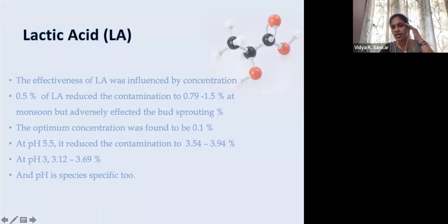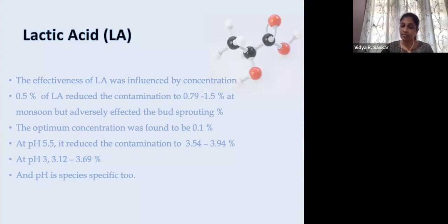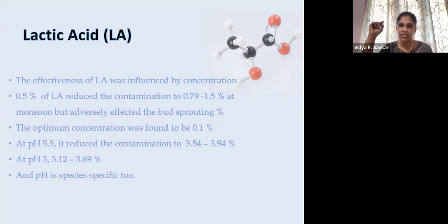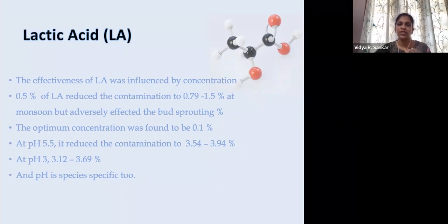For preservatives, we selected organic acids such as lactic acid, citric acid, acetic acid, etc. We found lactic acid is very effective at the concentration of 0.5%, reducing initial contamination to 0.79-1.6% in the monsoon season, where the control showed 68% contamination. However, this concentration has some adverse effect on sprouting response. So we adjusted the concentration of lactic acid to a reduced level of about 0.1%, which was found to be very suitable for most bamboo species. The effect of pH also plays a very great role; at pH 5.5 it reduced contamination to 3.5-3.9%, and at pH 3, a significant reduction of about 3.1-3.69% contamination was obtained at the initial stage.